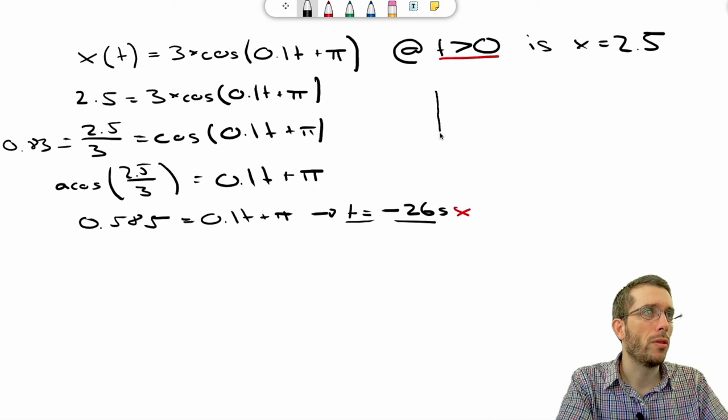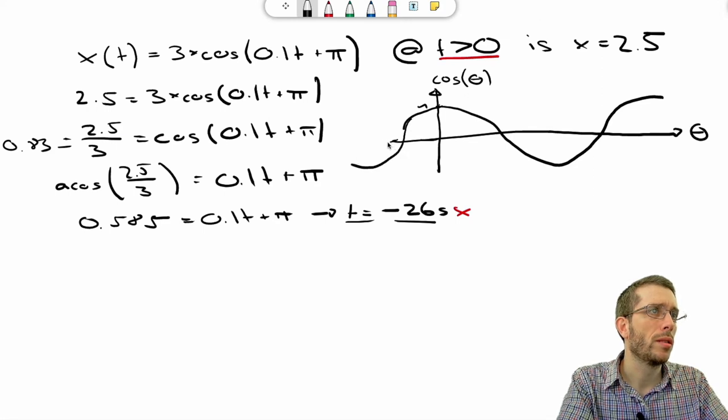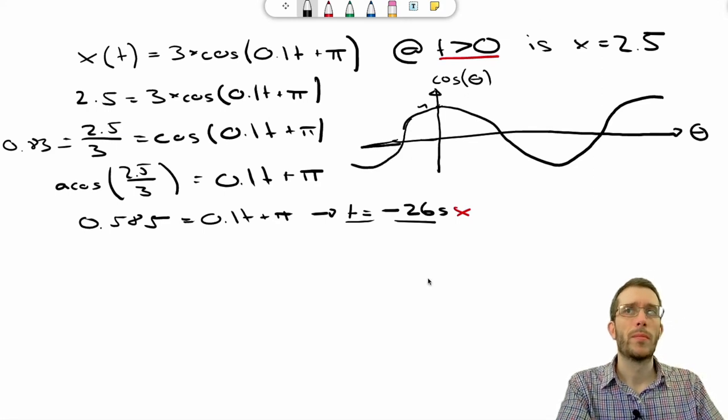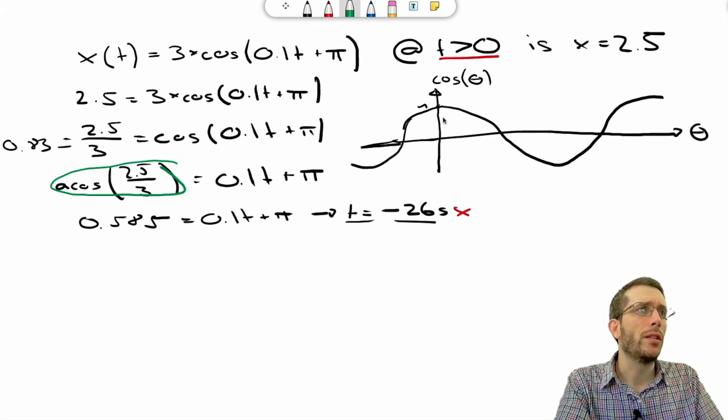So the cosine function looks as following. If we plot cosine of an angle θ as a function of θ, we will start at 1, go down to 0, come back to 1 and so on and it will also extend on the left side. Now what you're basically asking your calculator by typing this one here is, okay, so for what angle do I get 0.83? So 0.83 is about here.